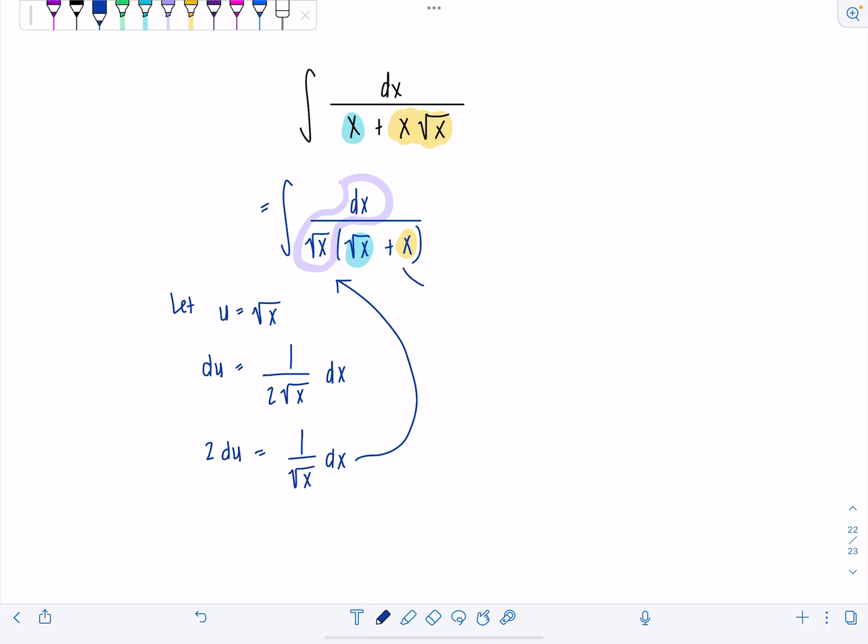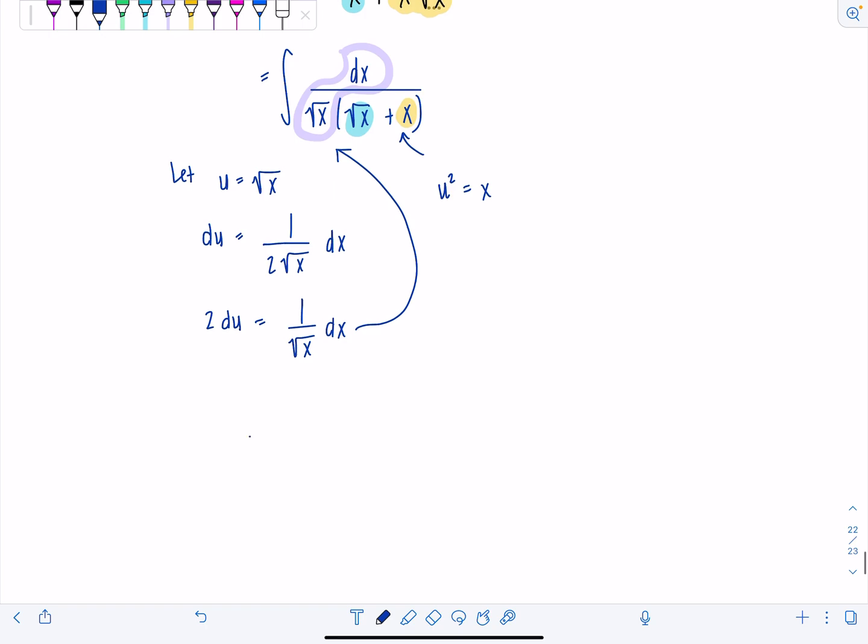And you might say, wait a minute, but what about this plain old x? I get that u is radical x. But remember that means u squared is just equal to x. So my new integral in terms of u, let's put the 2 outside. I love doing that. Put the constants outside.